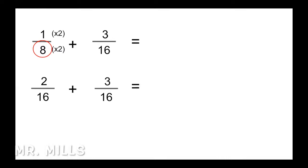Now we carry over 3 sixteenths and add straight across the top. 3 plus 2 is 5, and we keep the denominator since they're in the same unit. So 5 sixteenths. We have to ask: can this be reduced? Typically, if the top number is odd when working in sixteenths, we can't reduce it — 5 cannot go into 16 equally. So 5 sixteenths is our final answer.